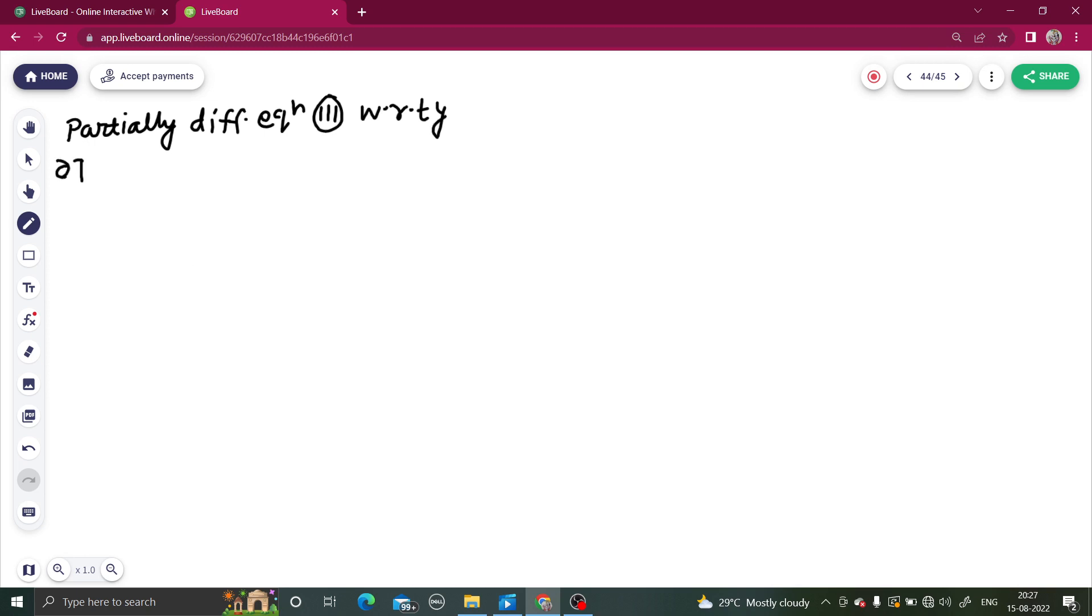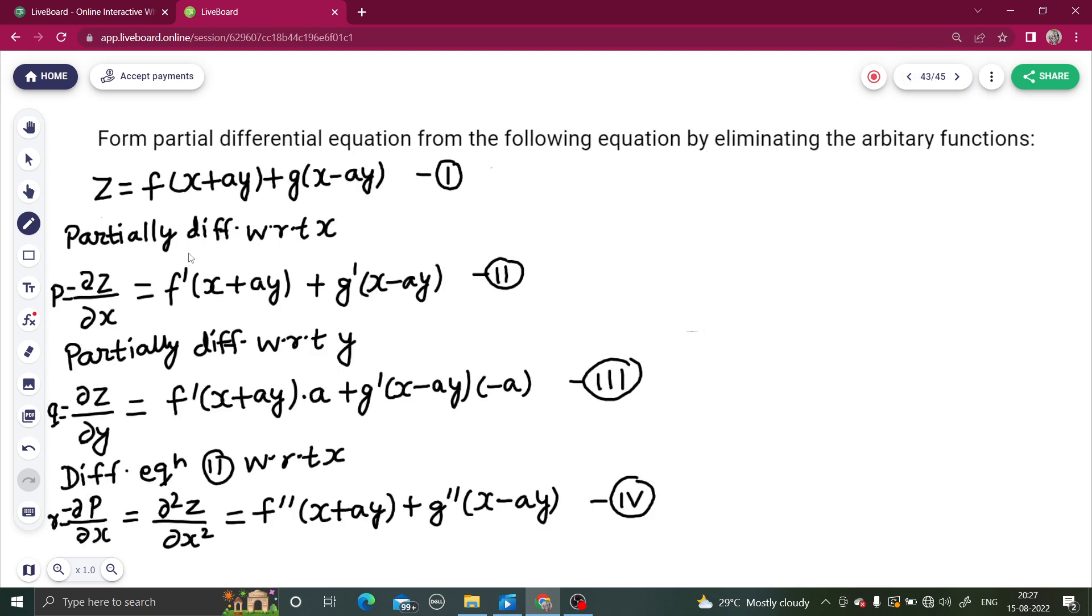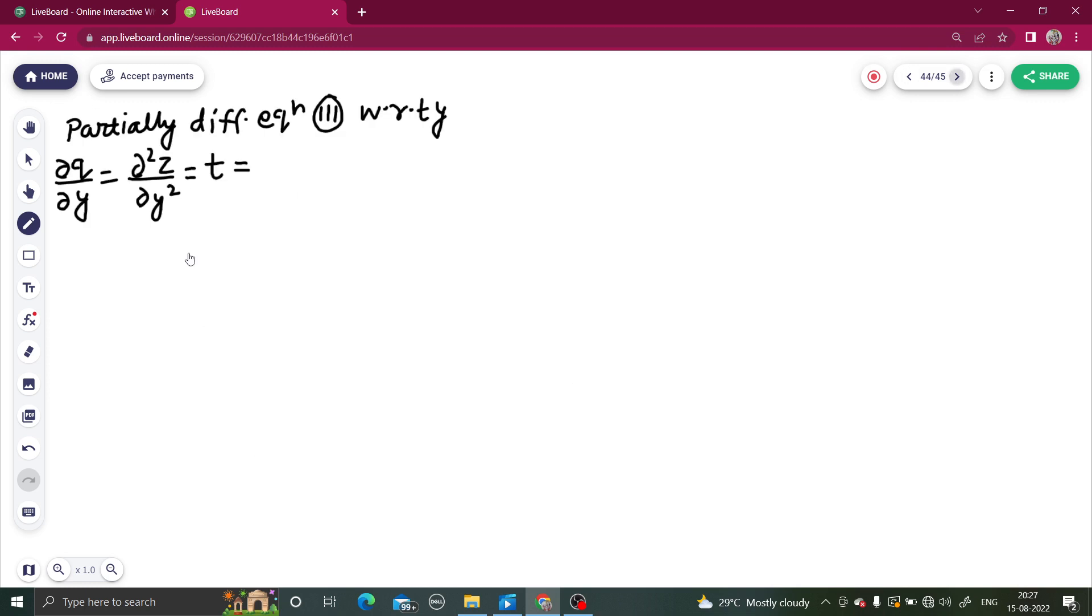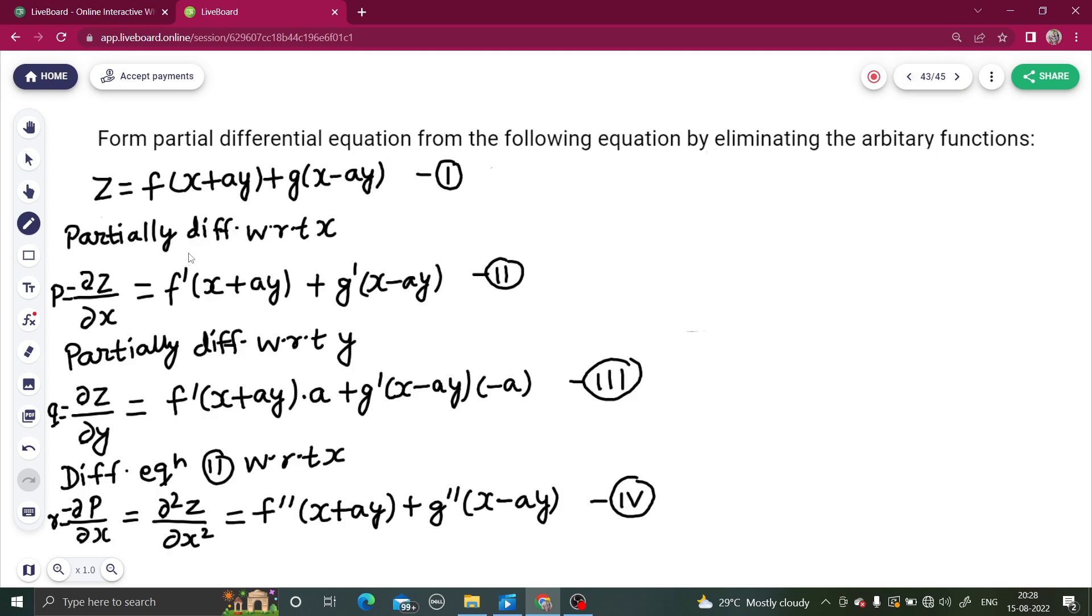Same notation - there is t, not s. S is del 2 z by del x del y. What will this be equal to? f double dash (x plus ay) into a. One a was already there, one more a will come, so this will become a square. So g double dash (x minus ay) into a square.